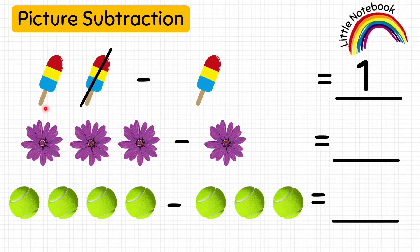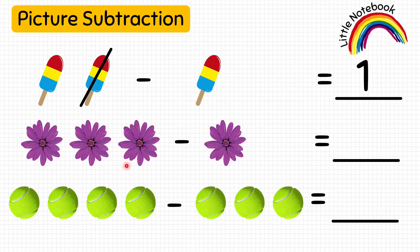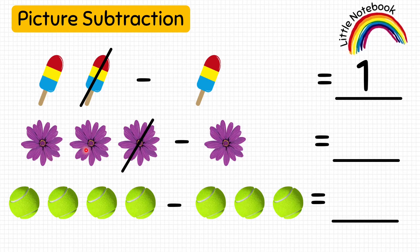Now the next question is: three flowers minus one flower equals how many flowers? We will solve this the same way — you have three flowers and you give one flower to your friend, so let's cross one flower. How many flowers are we left with? One, two — so our answer is two. Three minus one equals two.